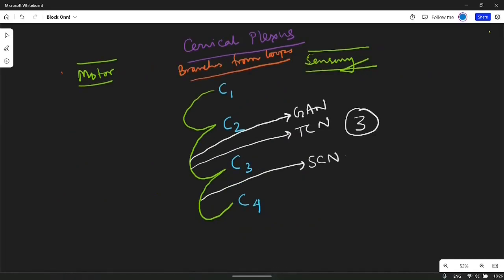The motor branches include from C1 and C2 loop total four nerves. Number one, communicating branches to vagus, rectus capitis anterior, rectus capitis lateral and the longus capitis.